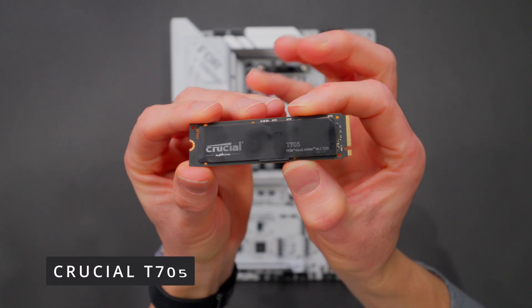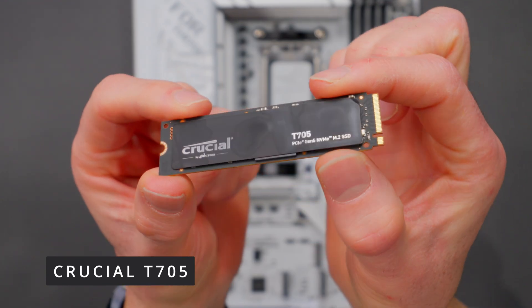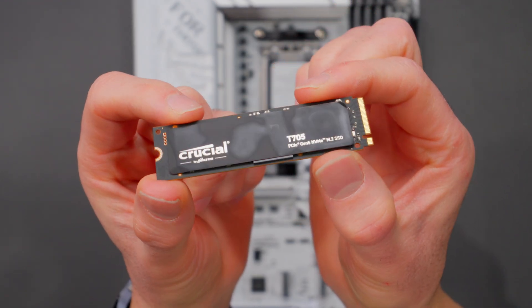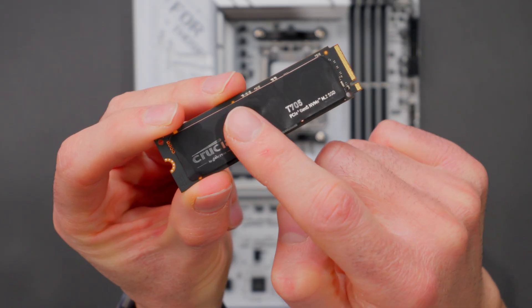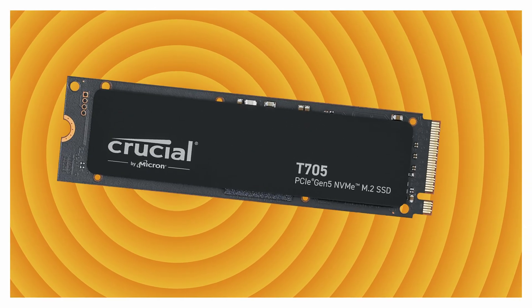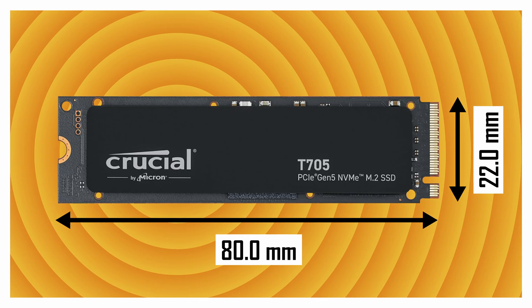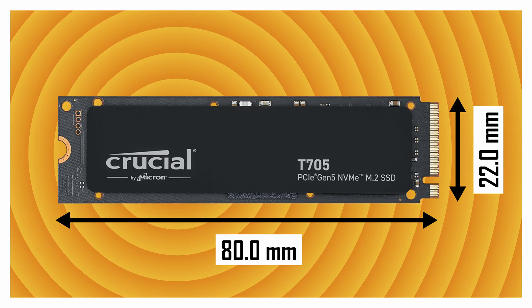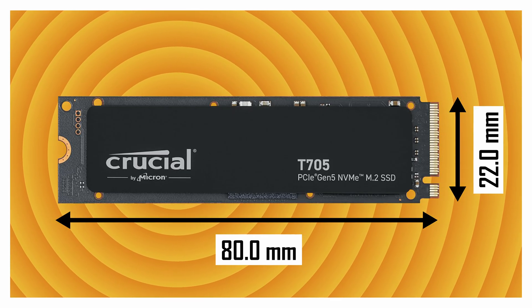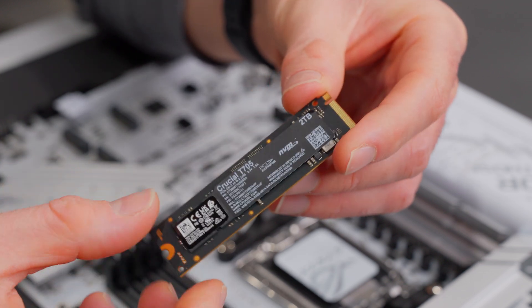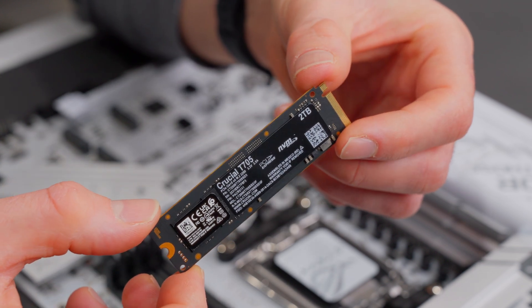The SSD I'm installing is the Crucial T705, two terabyte model. There's a little thermal grease left on there from when I was testing it. This is a 2280 type, which means it's 22 millimeters wide by 80 millimeters long — this is the most common type of SSD and motherboards usually come ready for this size by default. Notice it has memory chips not just on the front but also on the back — this is what we call a double-sided SSD, and remember that because it's going to come up again when we install it.